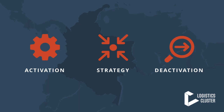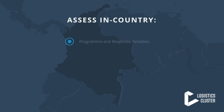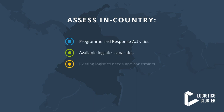To do this effectively, the GNA must understand the following four elements of the response: your organization's program and response activities, your organization's available logistics capacities, the logistics needs and constraints experienced by your organization, and the potential logistics challenges that you see might impact operations. The GNA will then analyze the information provided by the different partners consulted during the interviews to identify logistics gaps or bottlenecks and propose suitable solutions.